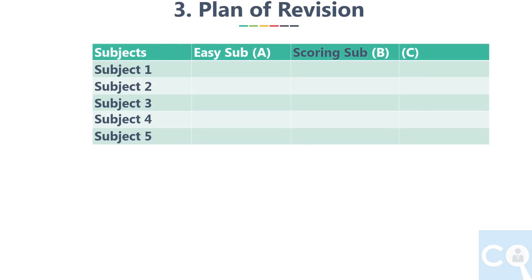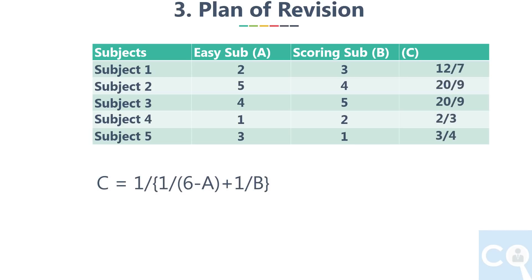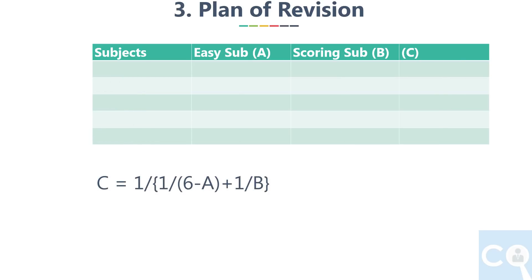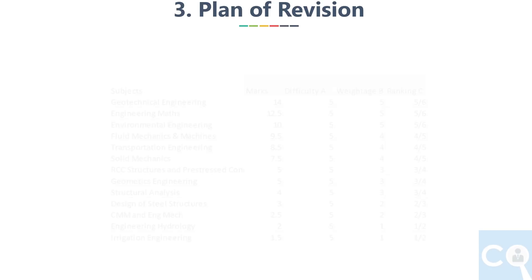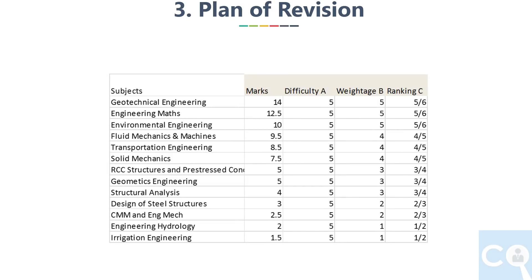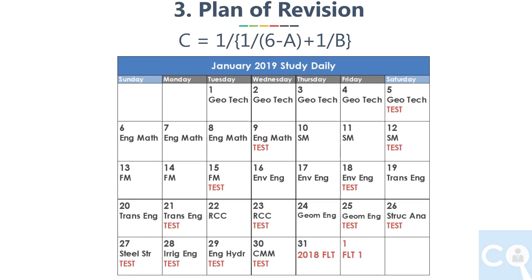For revision, you should decide the sequence based on the weightage and difficulty of each subject. For example, if a subject has the highest weightage give it a rating of 5, and the least weightage as 1. Similarly, rate the highest difficulty subject as 5 and the easiest as 1. Then apply this formula and arrange subjects from highest to lowest ranking to get the sequence. For this plan, weightage is based on the last 4 years' average and difficulty is rated 5 for every subject as they are all currently difficult. Applying this formula gives us the sequence, and the number of revision days for each subject is assigned based on the same weightage.